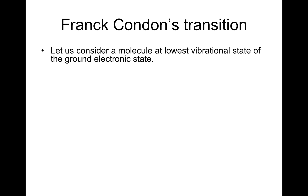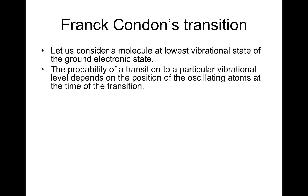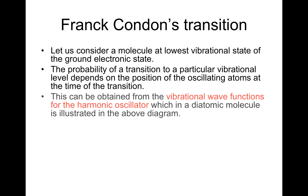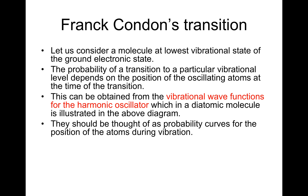Consider a molecule at the lowest vibrational state of the ground electronic state. The probability of a transition to a particular vibrational level depends on the position of the oscillating atom at the time of the transition. This can be obtained from the vibrational wave functions of the harmonic oscillator, which in a diatomic molecule are illustrated in the diagrams. These should be thought of as probability curves for the position of the atoms during vibration.